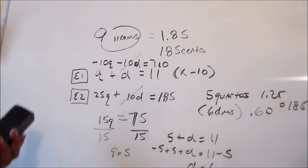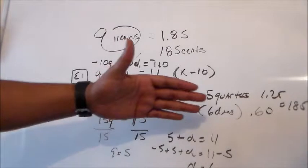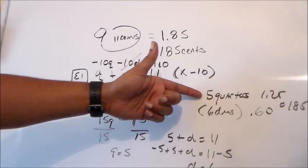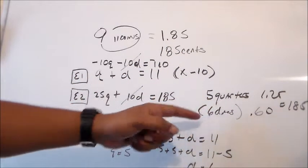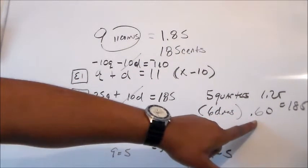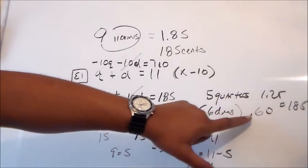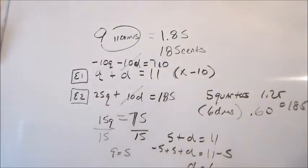So there's two ways we could have manipulated that but we still come to understanding that we have 5 quarters which equal $1.25 and 6 dimes which equals 60 cents. 125 plus 60 cents equals 185 cents if you would. So that is the answer to the question.